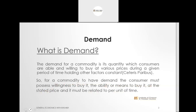All four elements must be present if there is to be demand. The elements are: willingness, ability, price, and time. Therefore, holding other factors constant, the demand for a commodity is the quantities of that particular commodity that consumers are able and willing to buy at various prices over a period of time.